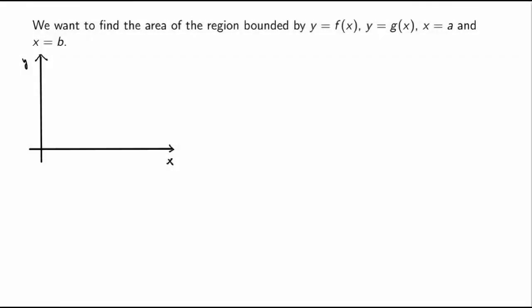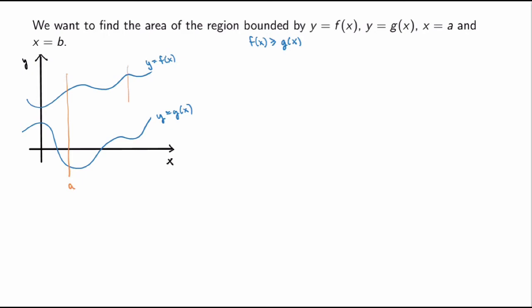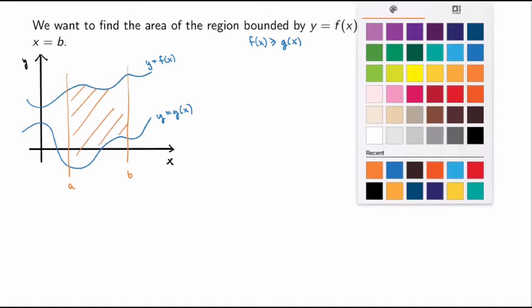Suppose that I want to find the area of the region bounded by two curves, y equals f of x and y equals g of x, and two vertical lines, x equals a and x equals b. I have one curve y equals f of x and another y equals g of x. For this first example I'm going to assume that f of x is greater or equal to g of x over the interval a to b, and we'll relax this assumption later on. I'm interested in the region bounded by these curves — the area of the region shaded in orange.